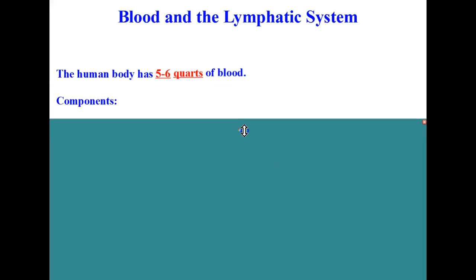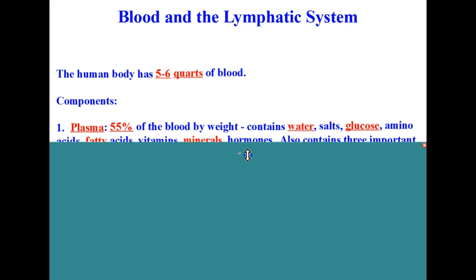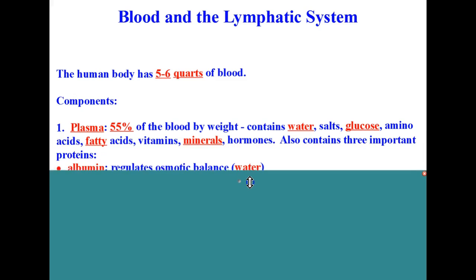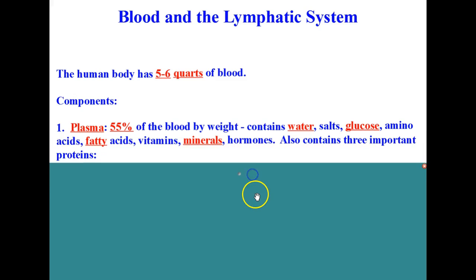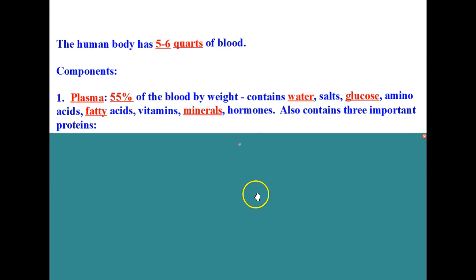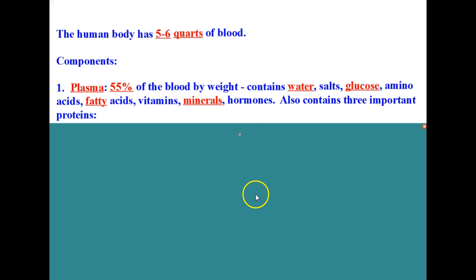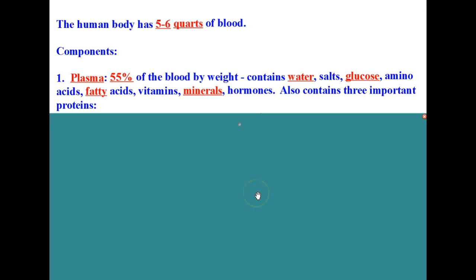Blood is comprised of, number one, plasma. Plasma is 55% of the blood by weight. It contains water, salts, glucose, amino acids, fatty acids, vitamins, minerals, and hormones.